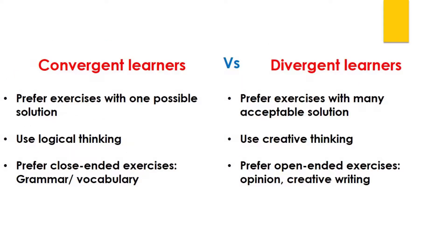The third learning style is convergent-divergent thinking. Convergent learners prefer dealing with problems and exercises which require one possible logical solution, such as cloze grammar exercises or direct comprehension questions. Divergent learners are more comfortable working with open-ended exercises which accept many possible solutions, such as ambiguous questions, exercises of expressing opinion, and tasks requiring creativity.